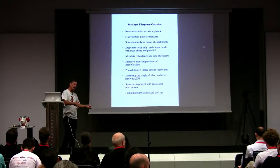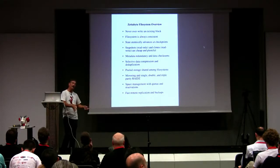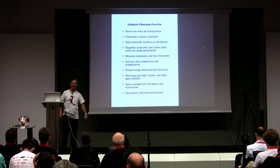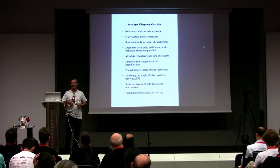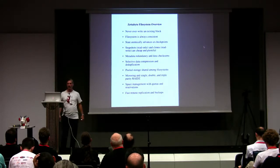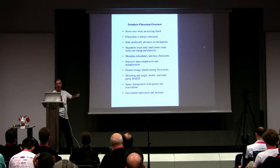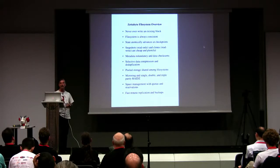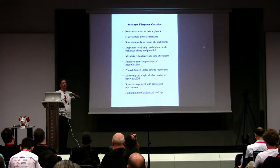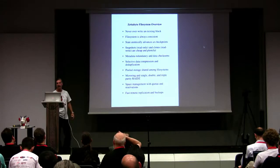Unlike a traditional file system where you give it a certain amount of space when you create it and that's it, with ZFS you have a pool of blocks shared among all the file systems, clones, and so on running in that pool. You have mirroring and also single, double, and triple parity RAID. I pulled the RAID stuff because it just takes too long to explain, but it's in the book. For space management, you can put quotas on users and also reserve space — you can make sure a certain amount of space is available to a file system so one file system doesn't go crazy and everybody else dies a horrible death. And there's fast remote replication and backups.